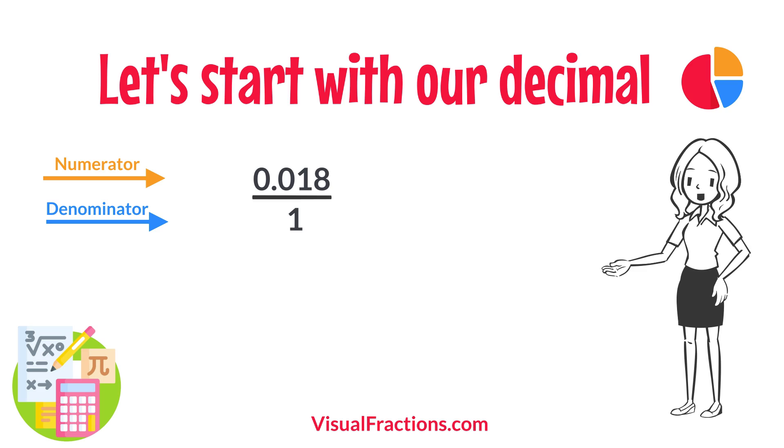This sets up the conversion process where we multiply both the numerator, 0.018, and the denominator, 1, by 1,000 because there are three decimal places.